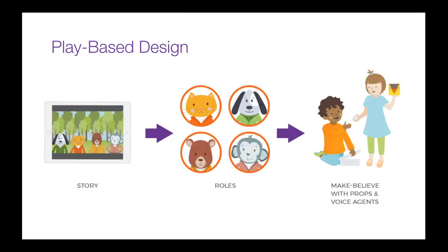Our method is based on make-believe play in the Tools of the Mind style, which involves groups of children in planning play, negotiating roles, and using generic physical props to stand for imaginary objects. It has two technology components. The first is Story Carnival, which is a web app that has stories designed with four animal characters that explore different situations and have to collaborate with each other. It also has a play planner for children to take turns choosing which character they want to play as.